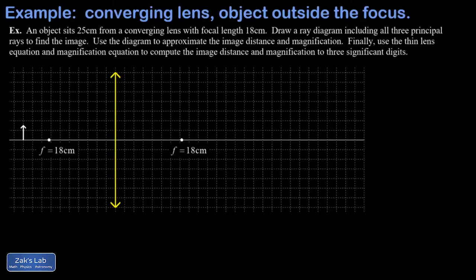In this video we're finding the image formed by a single convex lens. This lens has a focal length of 18 centimeters, and our object sits 25 centimeters from the lens—that's our object distance. We're asked to draw a ray diagram to find the image formed by this lens.